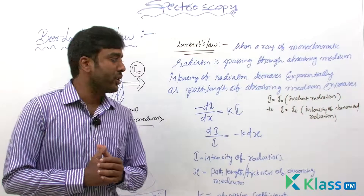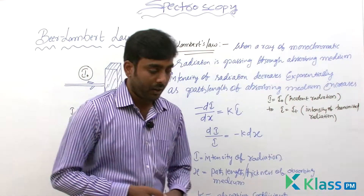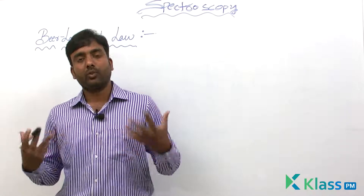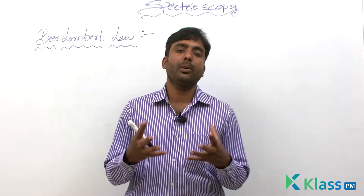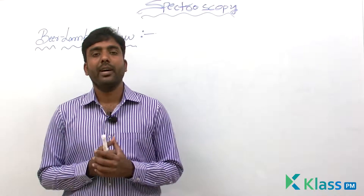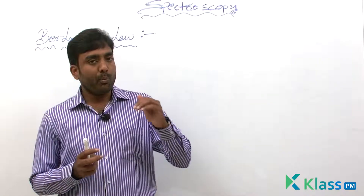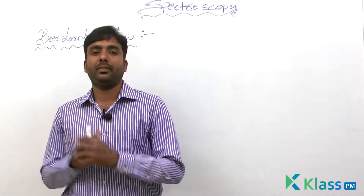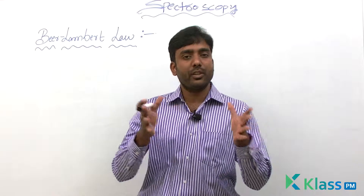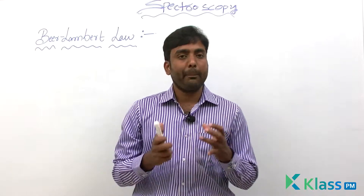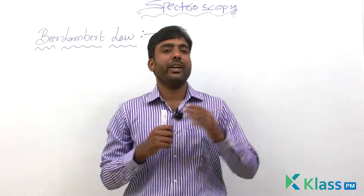Lambert's Law exhibits the relation between the path length or thickness of the sample medium and the intensity of incident radiation. Now we will see Beer's Law. Beer's Law states that the concentration of a chemical substance is directly proportional to the decrease in intensity — more concentration, more decrease; less concentration, less decrease in the incident radiation. Lambert's Law shows the relationship between thickness of the medium and intensity; as thickness increases, intensity decreases.